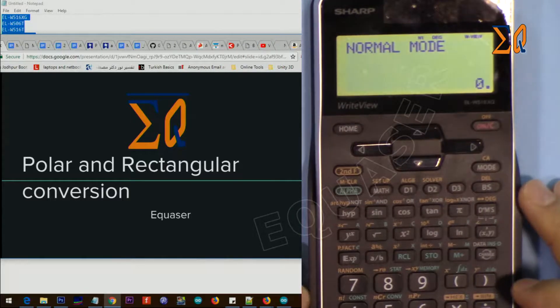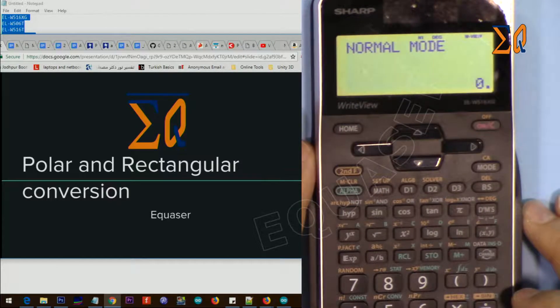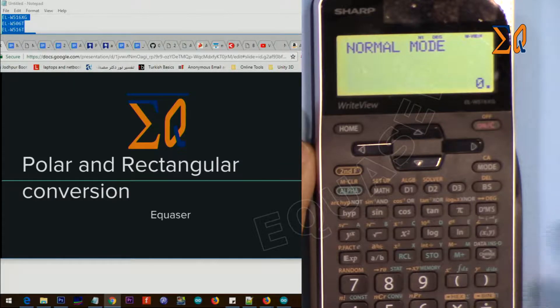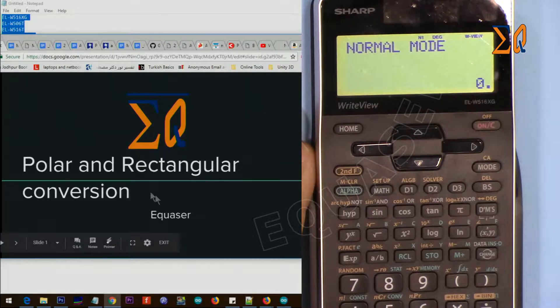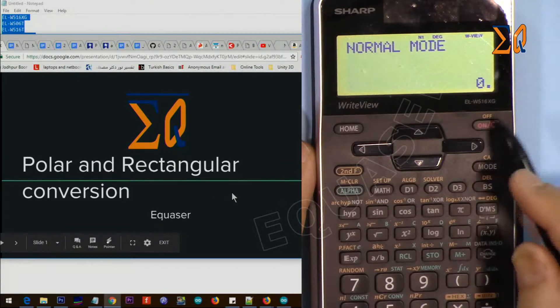Hi, welcome to a calculator tutorial from Equaser.com. In this video, we're going to see how we can convert polar and rectangular coordinates to one another using the Sharp